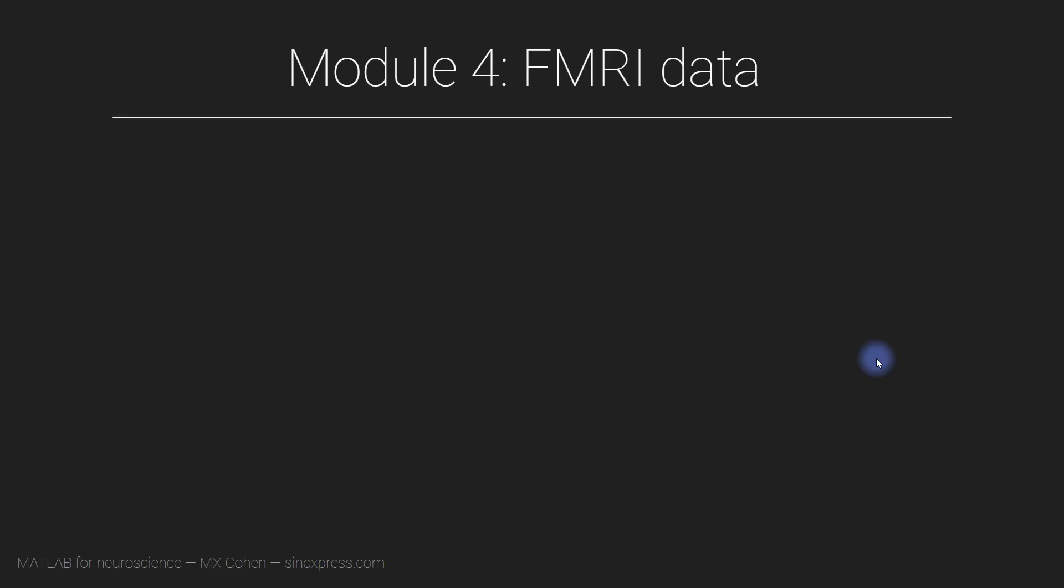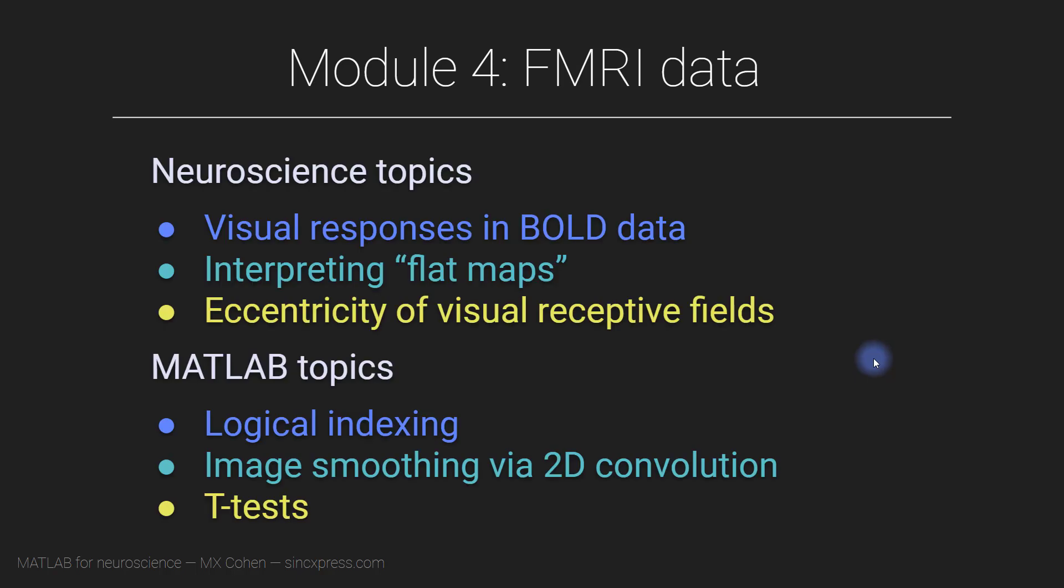In module 4 we are going to work with fMRI data. Along the way you will learn about some important topics in MRI research including how to interpret flat maps and a bit about visual receptive field mapping. In the MATLAB parts of this video I will introduce you to some image processing, in particular smoothing, some statistical analyses using t-tests, and of course that's in addition to learning more about indexing, loops, and data visualization.